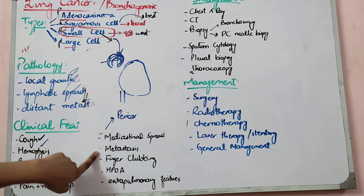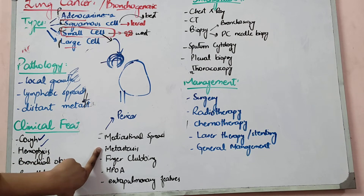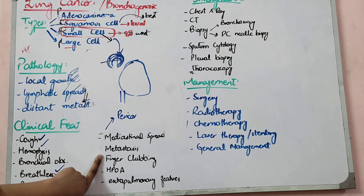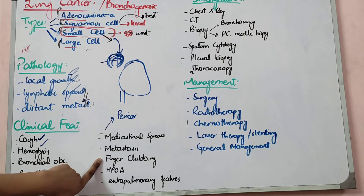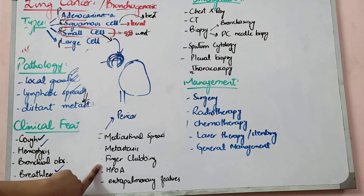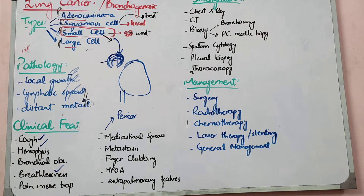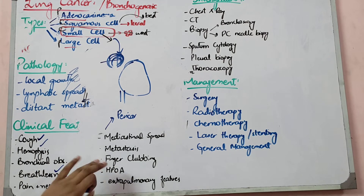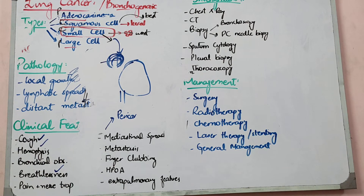Regarding distant metastases: bone is eroded causing hypercalcemia. In the brain, features of brain metastasis appear. In the kidneys, there can be ectopic enzyme or hormone secretion.